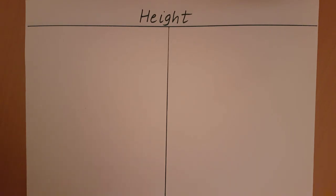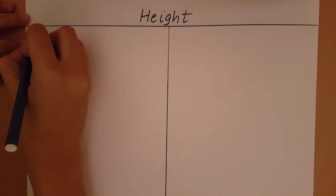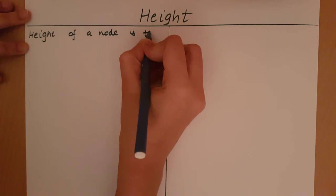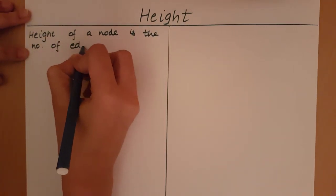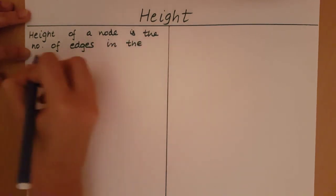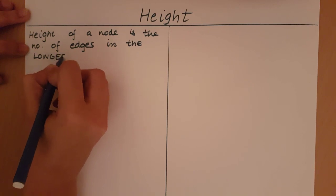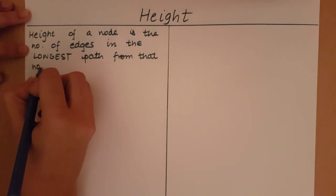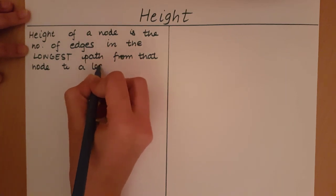In this video, we are going to talk about the term height with respect to the data structure trees. The height of a node is going to be the number of edges in the longest path from that node to a leaf node, or an external node.